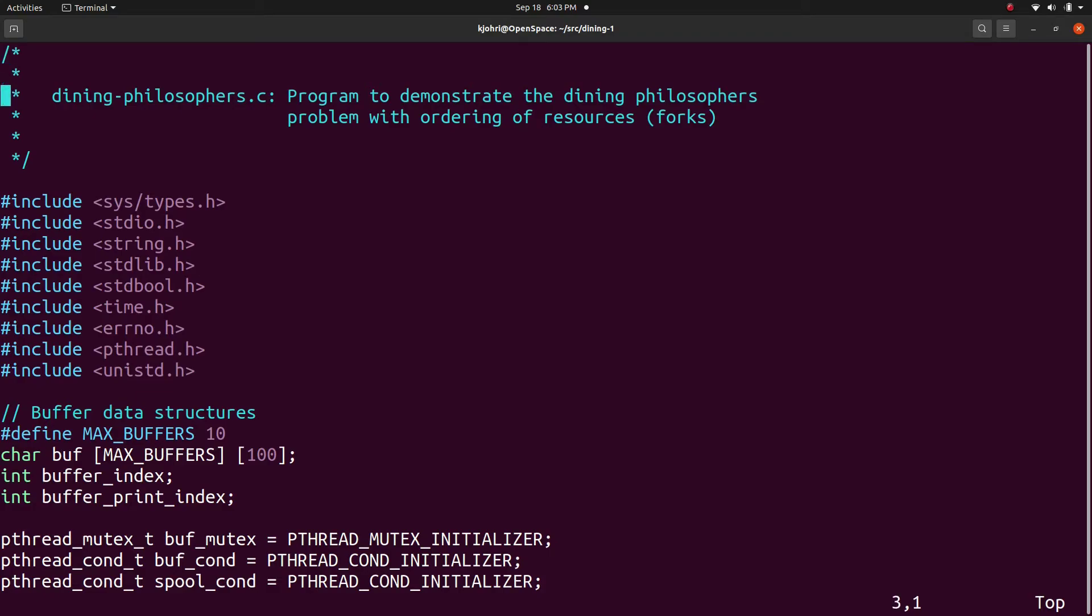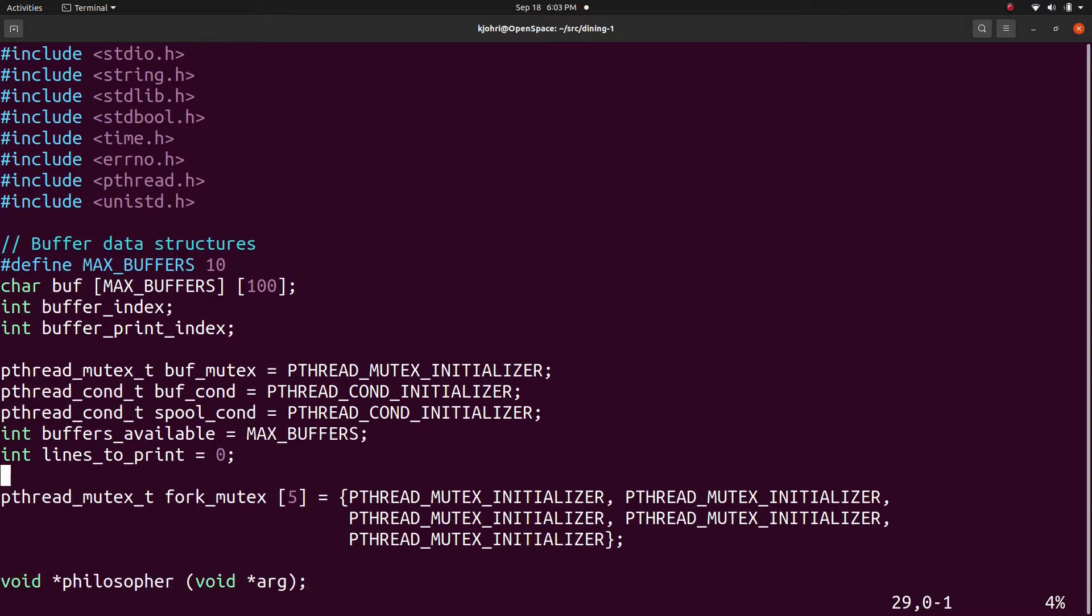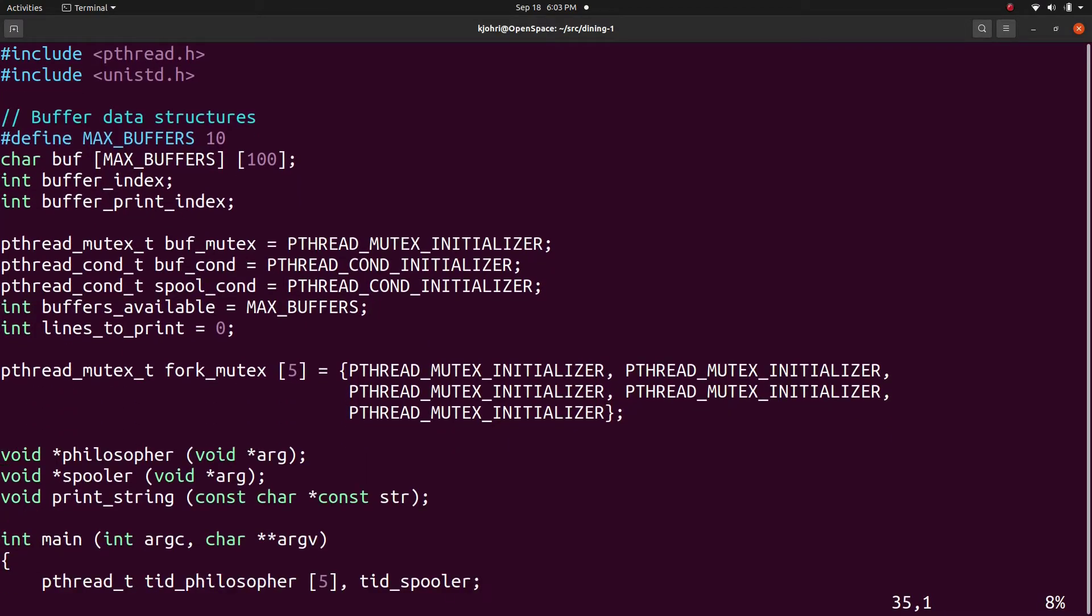And this is the program for dining philosophers to avoid deadlock with ordering of resources. First the header files and some buffers. The buffers are used for printing diagnostic messages. There are many threads and if each thread prints messages, the output would get mixed up. So there is a background thread spooler which prints messages on the terminal.